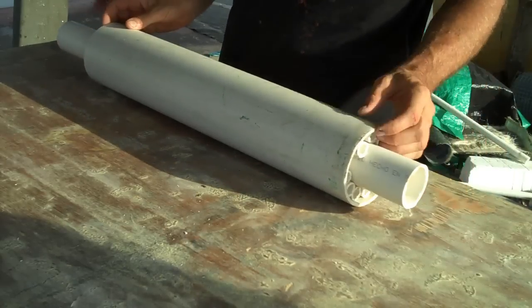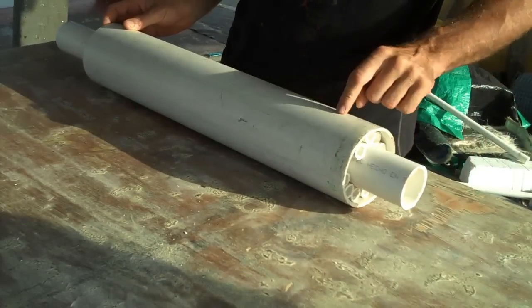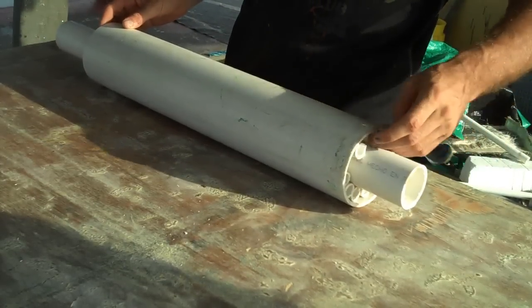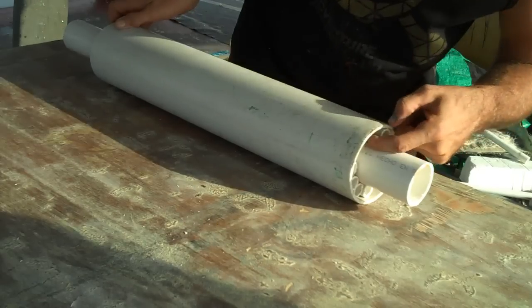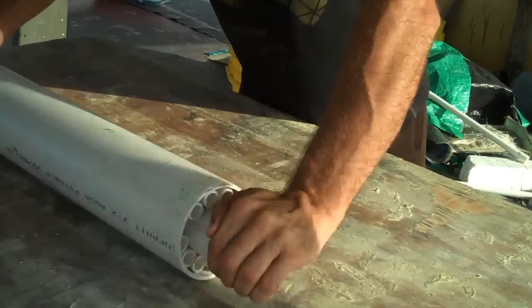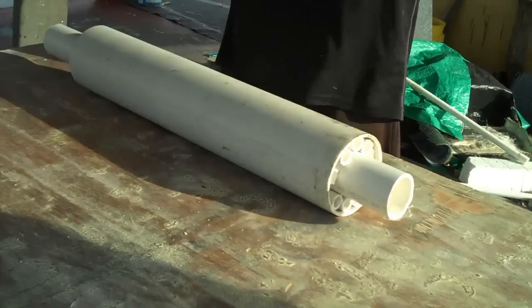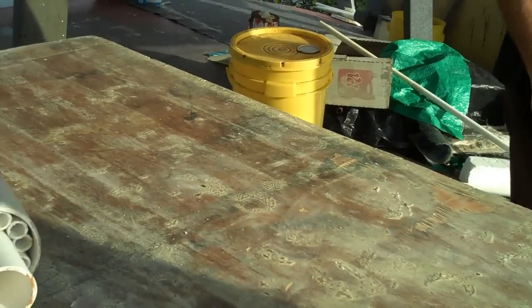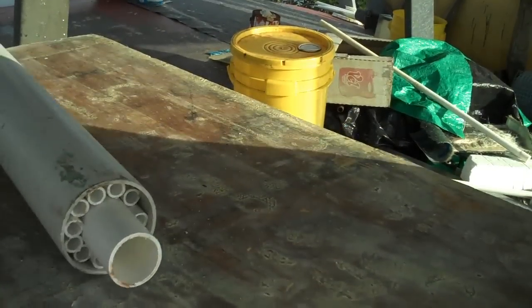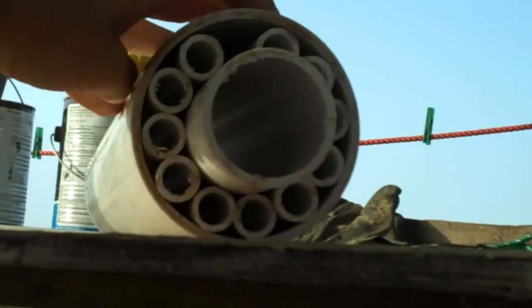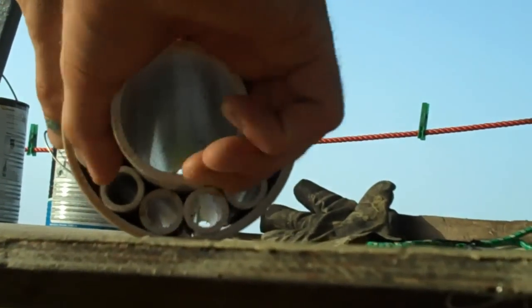This is all schedule 40 PVC pipe. This is a 2 inch, this is a 4 inch, and these are all half inches. I think there's 11 of those inside. Oh, perfect! How nice is that?